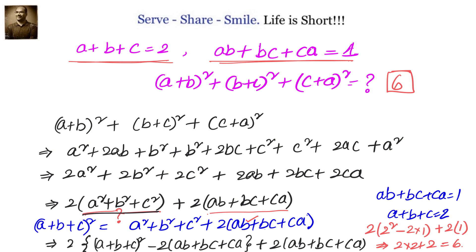But we don't know a² plus b² plus c², so we leveraged the identity that (a+b+c)² equals a² plus b² plus c² plus 2(ab plus bc plus ca). We rewrote a² plus b² plus c² as (a+b+c)² minus 2(ab plus bc plus ca), then substituted a plus b plus c equals 2 and ab plus bc plus ca equals 1. Simplifying, we get 2 into 4 plus 2 into 1, which gives 4 plus 2, equals 6.